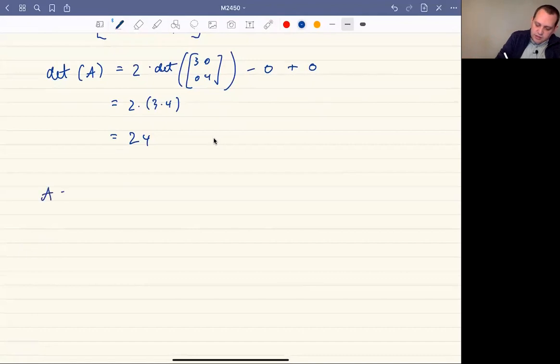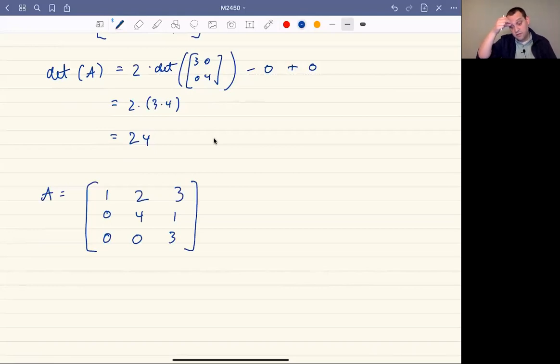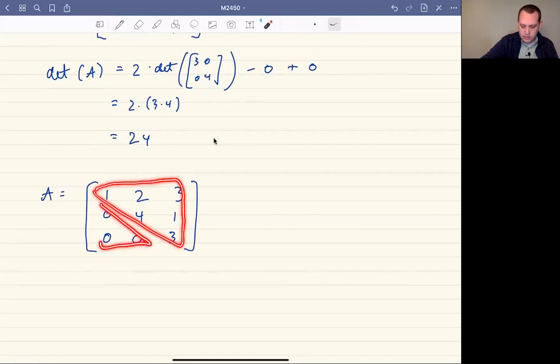The same trick works if you have what's called a triangular matrix. A triangular matrix is one where you have the lower triangle—let's say the matrix is [1, 2, 3; 0, 4, 1; 0, 0, 3]. That's triangular. The idea is that all the information is in this upper triangle, the lower triangle is 0. That's an upper triangular matrix.